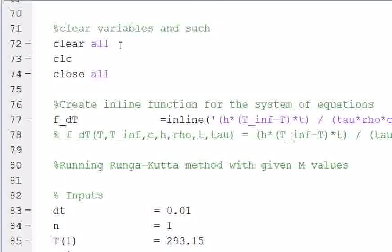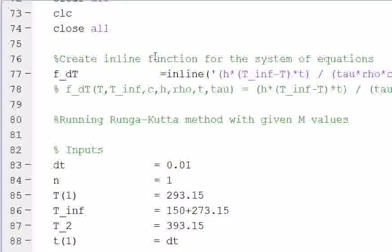So the script starts here. We start out with our usual clear all, close all, CLC. And then we want to create an inline function for the equation we want to use. The reason we do this is because if you look at the Runge-Kutta code or the scheme you use, you're going to be calling this function or evaluating the same equation multiple times during each iteration.